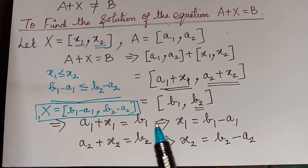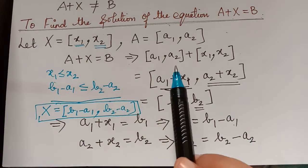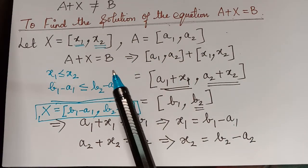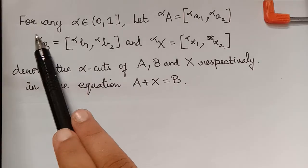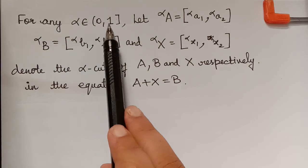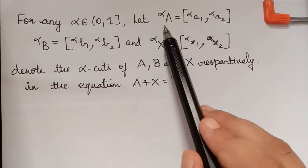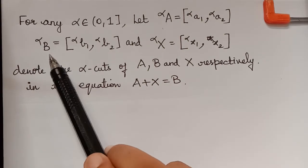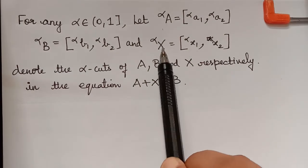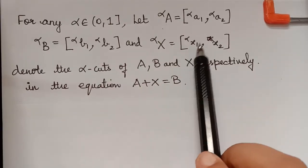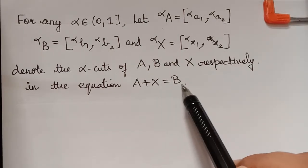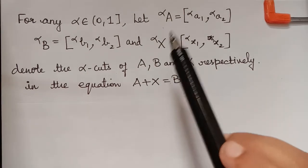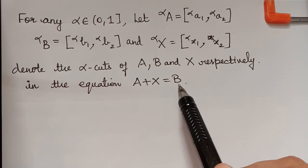Since any fuzzy number is uniquely represented by its alpha cuts, which are closed intervals, the described procedure can be applied to alpha cuts of arbitrary fuzzy numbers. Let alpha be an element of (0, 1]. The alpha cut of A is [a1_alpha, a2_alpha], the alpha cut of B is [b1_alpha, b2_alpha], and similarly for X. These denote the alpha cuts of a, b, and x in the equation a + x = b.